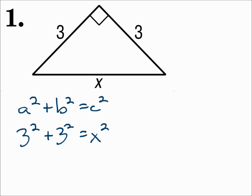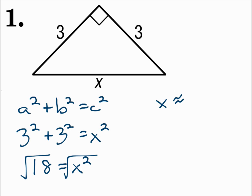Solve for x. We get 18 equals x squared, and then square root each side. x is approximately 4.2. With a right triangle, a squared plus b squared equals c squared — a and b are the legs, and c is the hypotenuse.